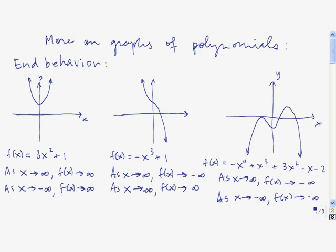You can see that for these two even degree polynomials, the end behavior is always in the same direction. That's going to be true for any even degree polynomial. For an odd degree polynomial, the end behavior is always in opposite directions — and we'll address that in a little bit.